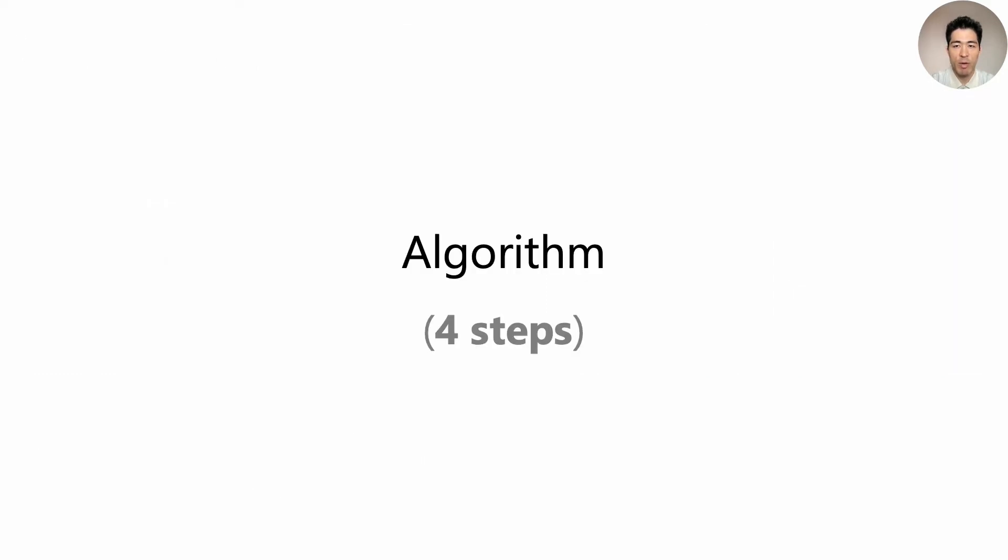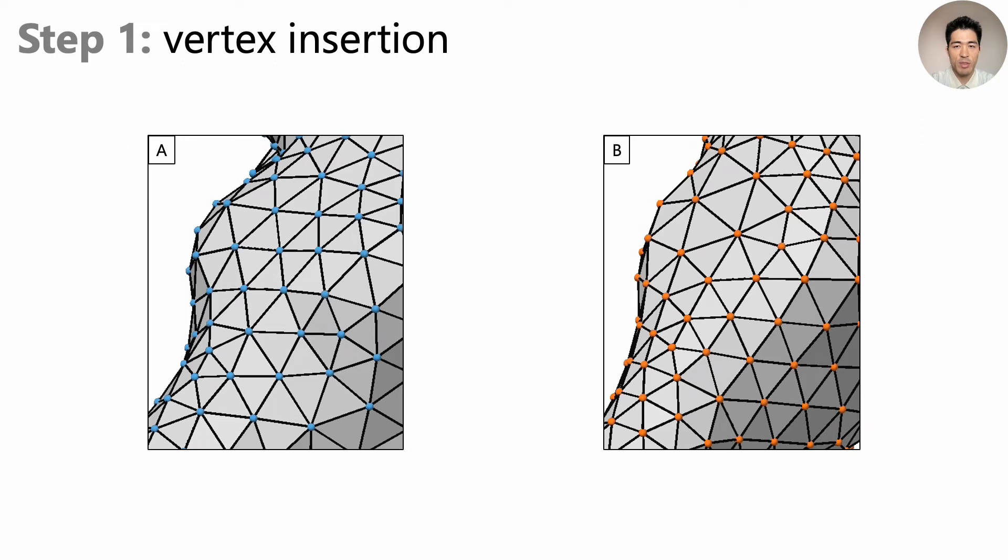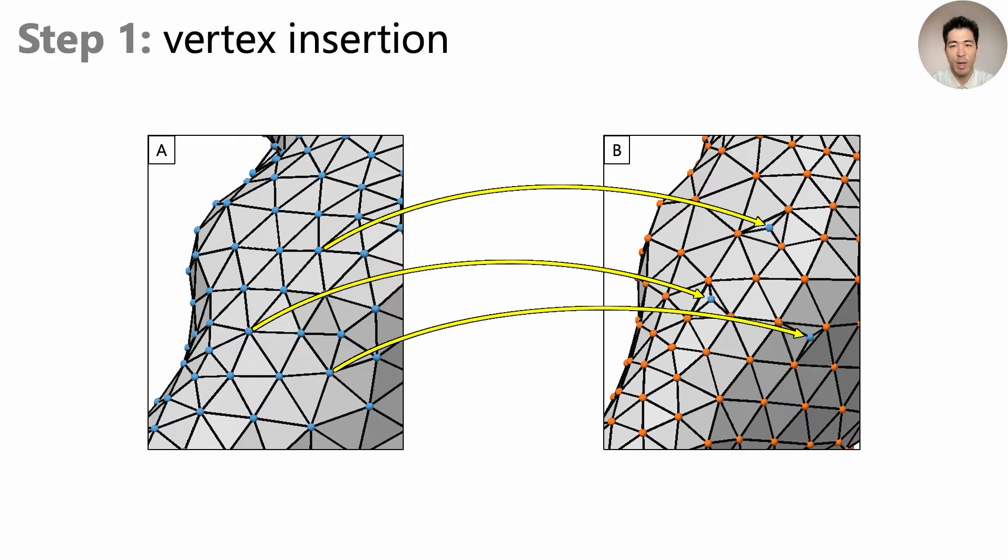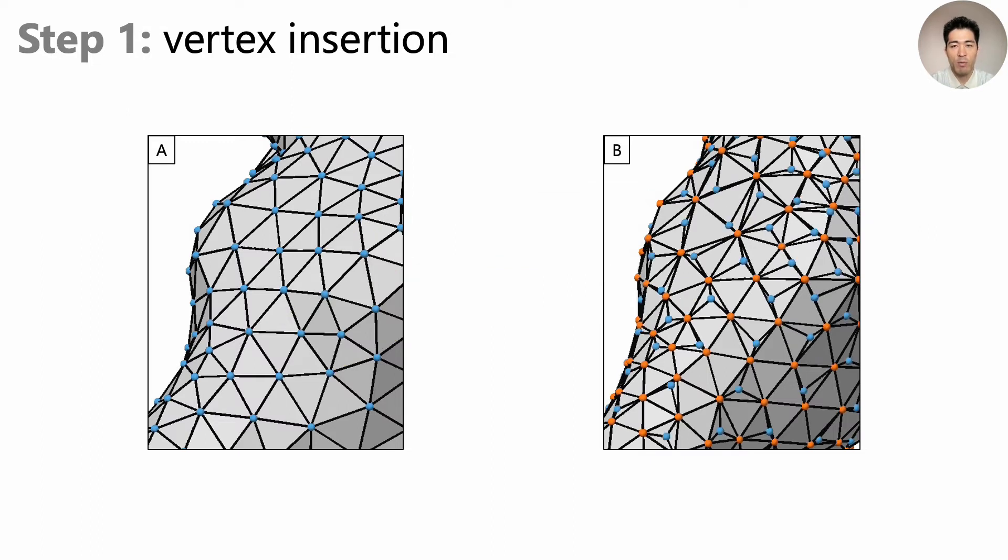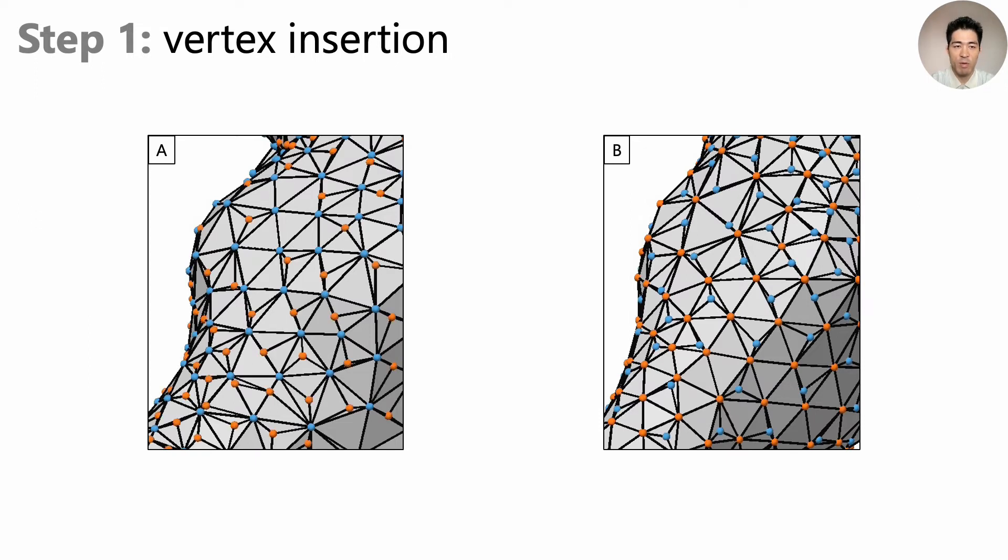So how do we generate it? Our algorithm mainly consists of four steps. The first step is vertex insertion, which is very simple. According to the input vertex image, we simply insert A's vertices to B, one by one, splitting triangles into three. And we end up with something like this. We do the same in the opposite direction as well.